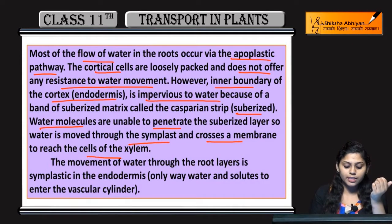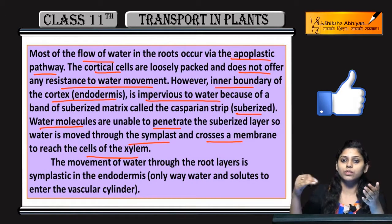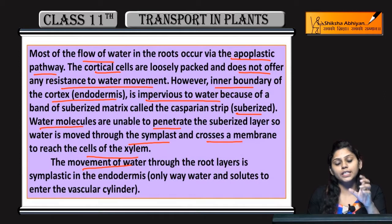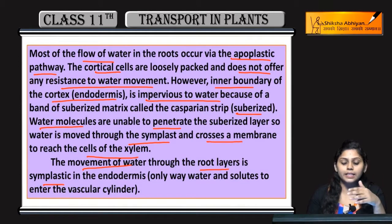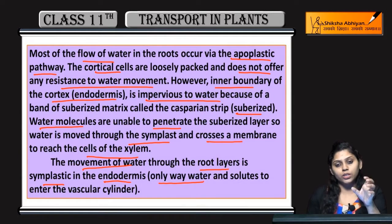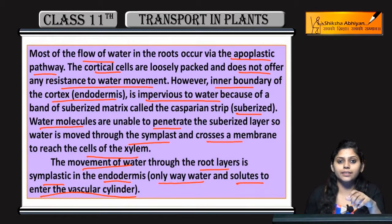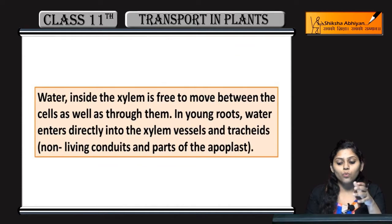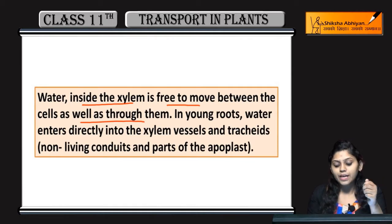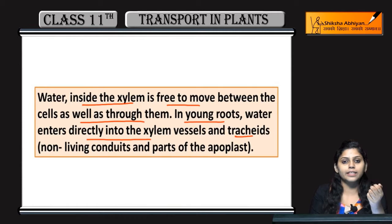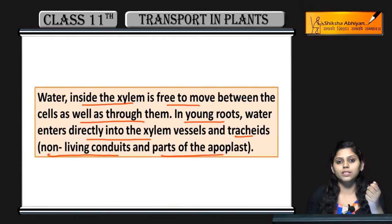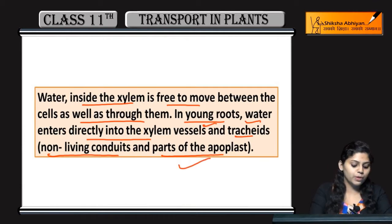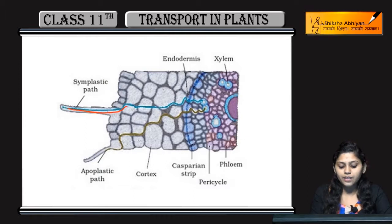Aur cross karta hai membrane to reach the cells of the xylem. Xylem ke cells tak pahunchne ke liye use membrane cross karni padti hai. Jo movement hai water ki through the root layers is symplastic in the endodermis. Only way hai water aur solutes ka to enter the vascular cylinder, kyunki endodermis mein enter karna padta hai. Water inside the xylem is free to move between the cells as well as through them. Young roots mein water enters directly into the xylem vessels. Xylem vessels ya tracheids non-living conduits hain aur part hain apoplast ke. You can see symplast pathway cells ke beech mein hoti hai plasmodesmata ke through, aur apoplast cell walls ke through aur intercellular spaces ke through hoti hai.